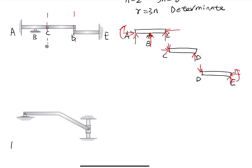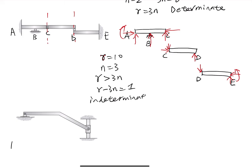We now check how many reaction forces we need to determine. Counting all unknown reactions: at A (3), B (1), C (2), D (1), E (3) gives R equal to 10. We have three members, so 3n equals 9. Since R is larger than 3n, this is an indeterminate structure. The degree of indeterminacy is R minus 3n equals 10 minus 9 equals 1. So this is an indeterminate structure to the first degree.